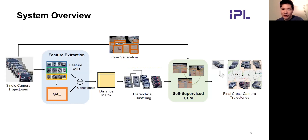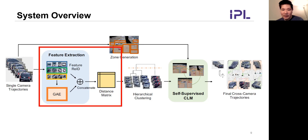This is our proposed framework. First, we use traffic-aware single-camera tracking to obtain single-camera tracking results. Since the main contribution of this work is focused on inter-camera tracking, our inter-camera tracking module has two parts: feature extraction and the self-supervised camera link model. Let's first introduce the feature extraction part.